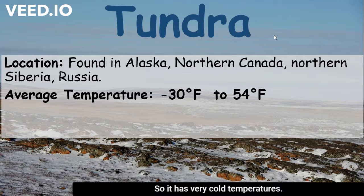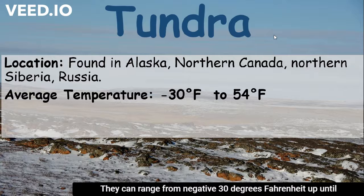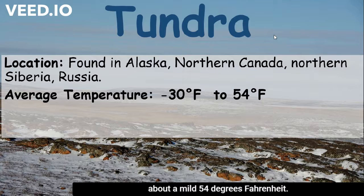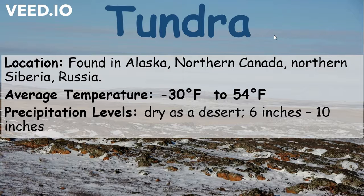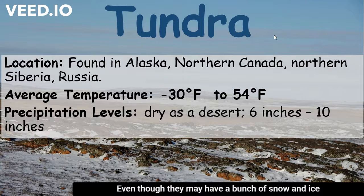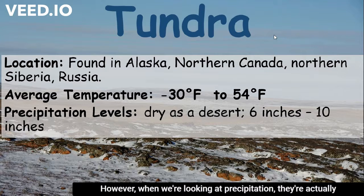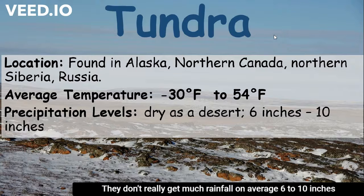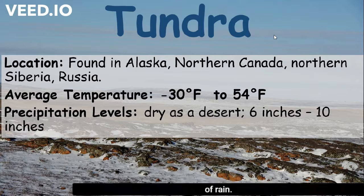They have very cold temperatures, ranging from negative 30 degrees Fahrenheit up until about 54 degrees Fahrenheit. Even though they may have a bunch of snow and ice, when we're looking at precipitation, they're actually dry as a desert. They don't really get much rainfall — on average, 6 to 10 inches of rain.